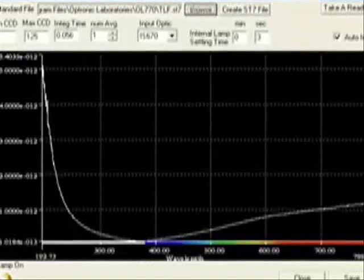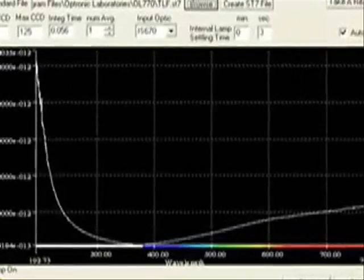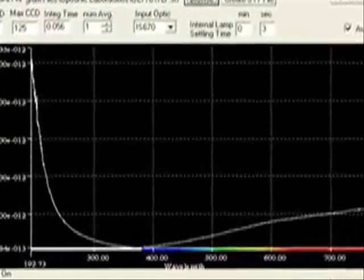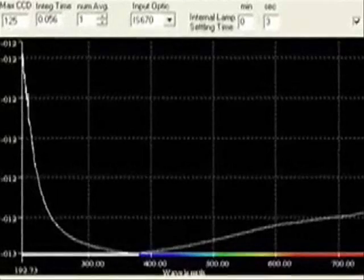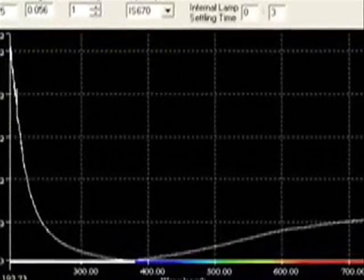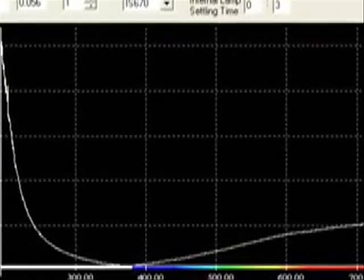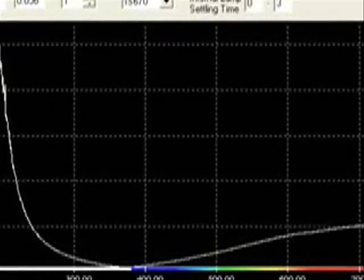With all metrology instruments, NIST traceable calibration is critical. Typically, maintaining traceability usually involves long periods of having a unit out of house and can become expensive. The OL-770 LED can be recalibrated on site, and it's as easy as taking a measurement.